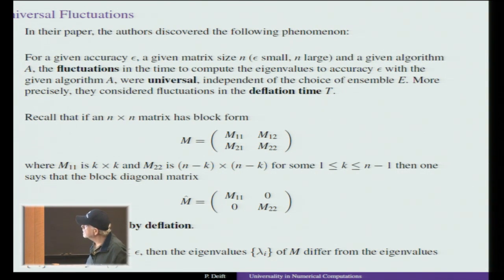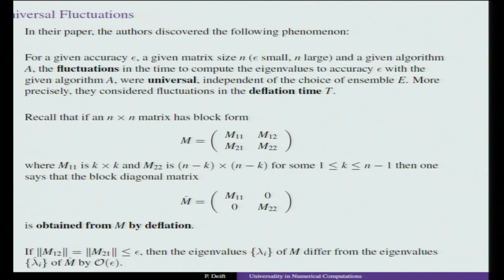In our paper we discovered the following phenomenon. For a given accuracy ε and given matrix size N — where ε should be small and N should be large, with a scaling region in which the phenomenon holds — and a given algorithm A, the fluctuations in time to compute the eigenvalues to accuracy ε were universal, independent of the choice of ensemble. So the universality concerns what choice you make of the ensemble.